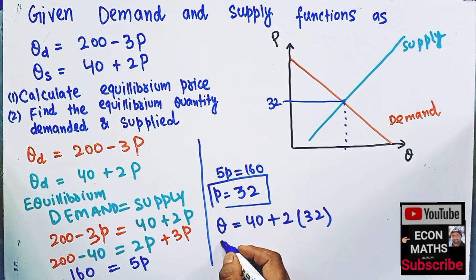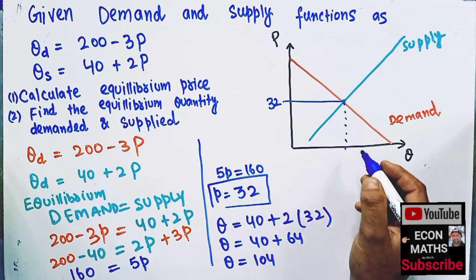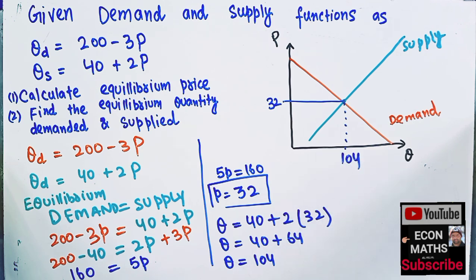So we get Q is equal to 40 plus 64. So quantity demanded or supplied will be equal to 104. So quantity demanded and supplied is equal to 104. I hope you like this video. Thank you.